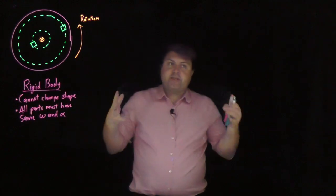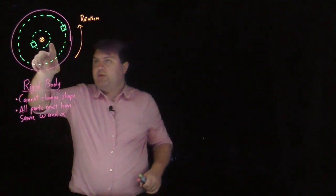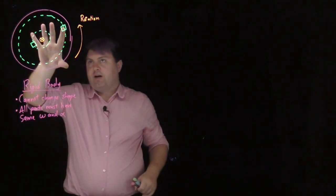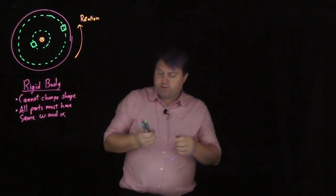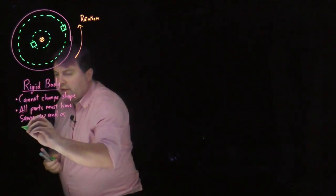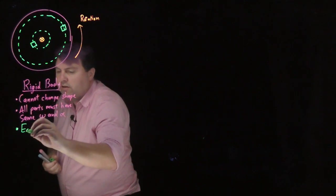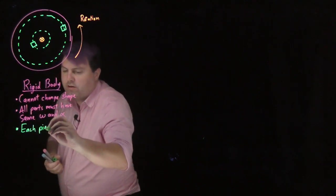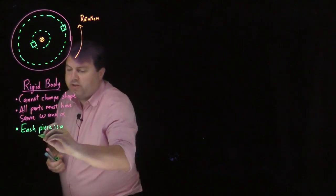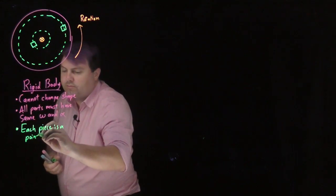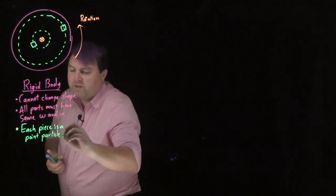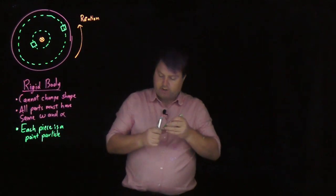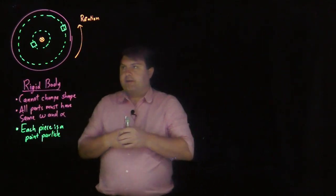But we want to understand more about this. So we can start using these pieces, and if we understand all of the pieces, we might be able to understand all of these. So we're going to say that each piece is a point particle. And if we add up enough of these point particles, then we're going to get our disk.